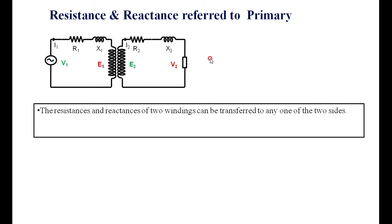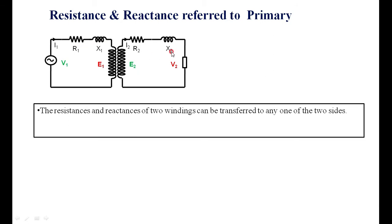The necessity of transferring the resistance and reactance to any one side means transferring R2 and X2 either to the primary — which is called resistance and reactance referred to the primary. If R1 and X1 are transferred to the secondary side, it is called resistance and reactance referred to the secondary side. The resistance and reactance of two windings can be transferred to any one side by circuit equivalence.